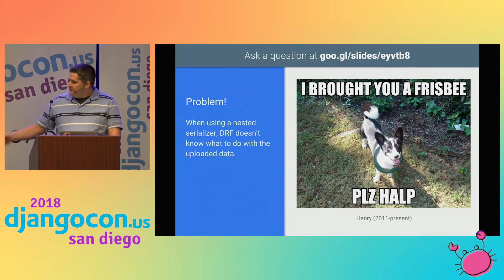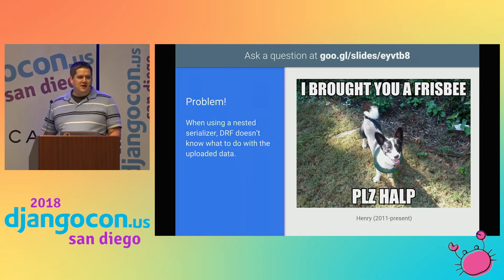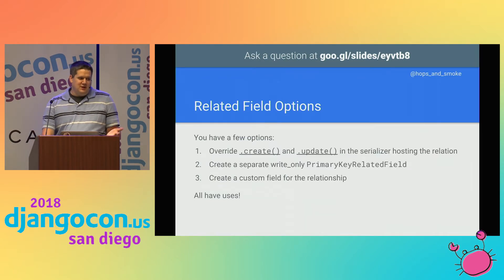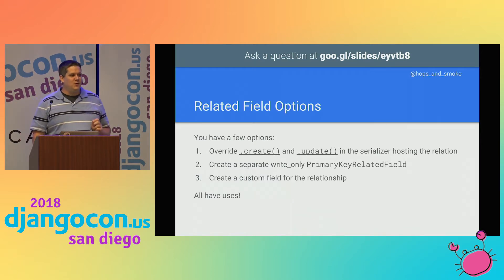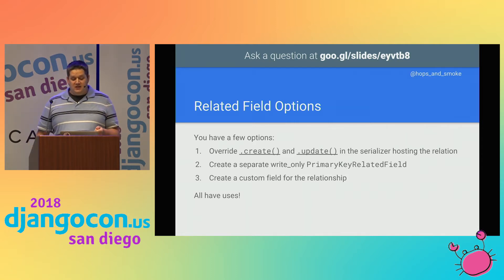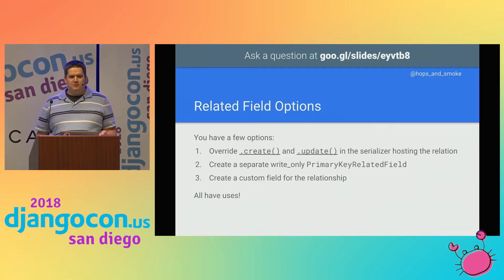You're not going to like this part: there is no single right answer for all use cases. You've got three really viable options for handling updated related data. You can either override the create and update methods in the serializer that hosts the relationship, such as the breed serializer hosting the species relationship. Or you could create a separate write-only field like species_id. Or last, you could create a separate field entirely to describe the relationship where you actually build a field class.